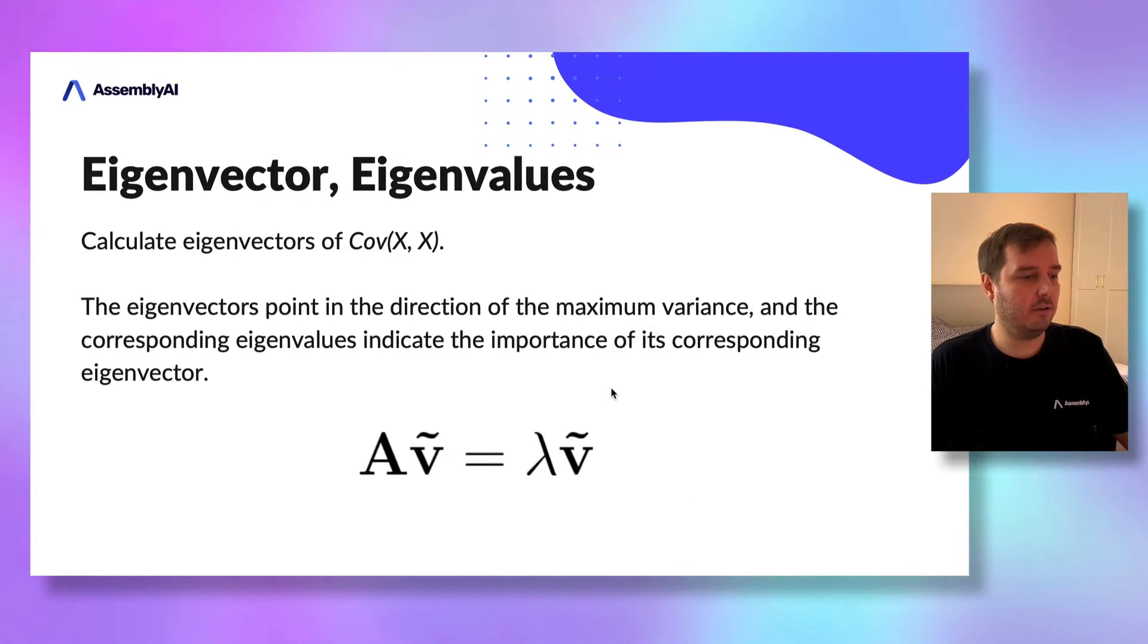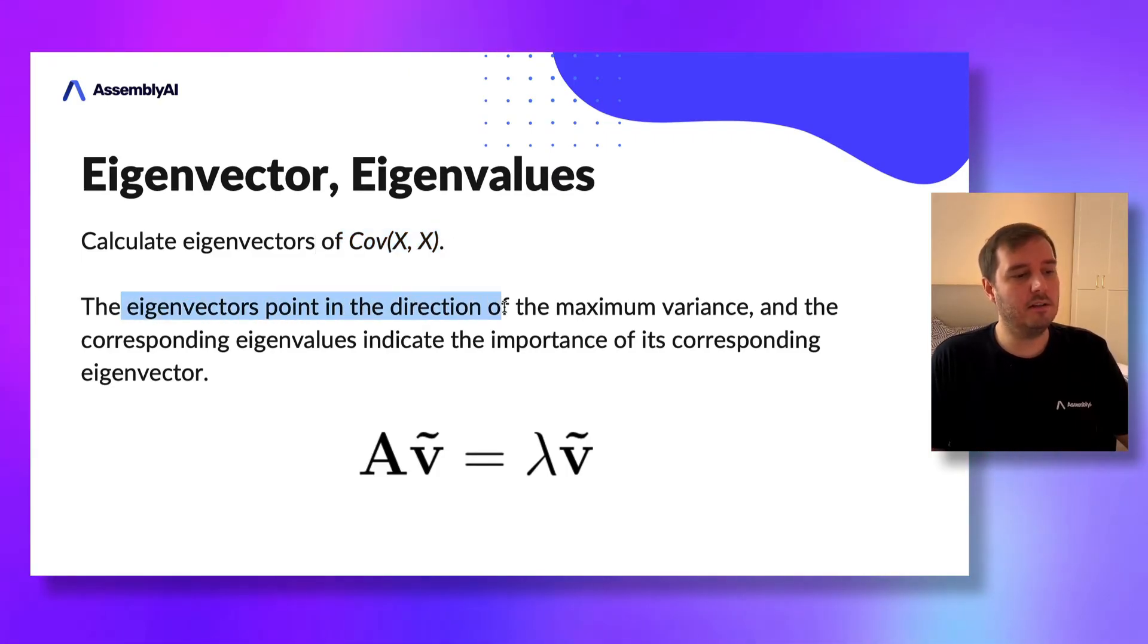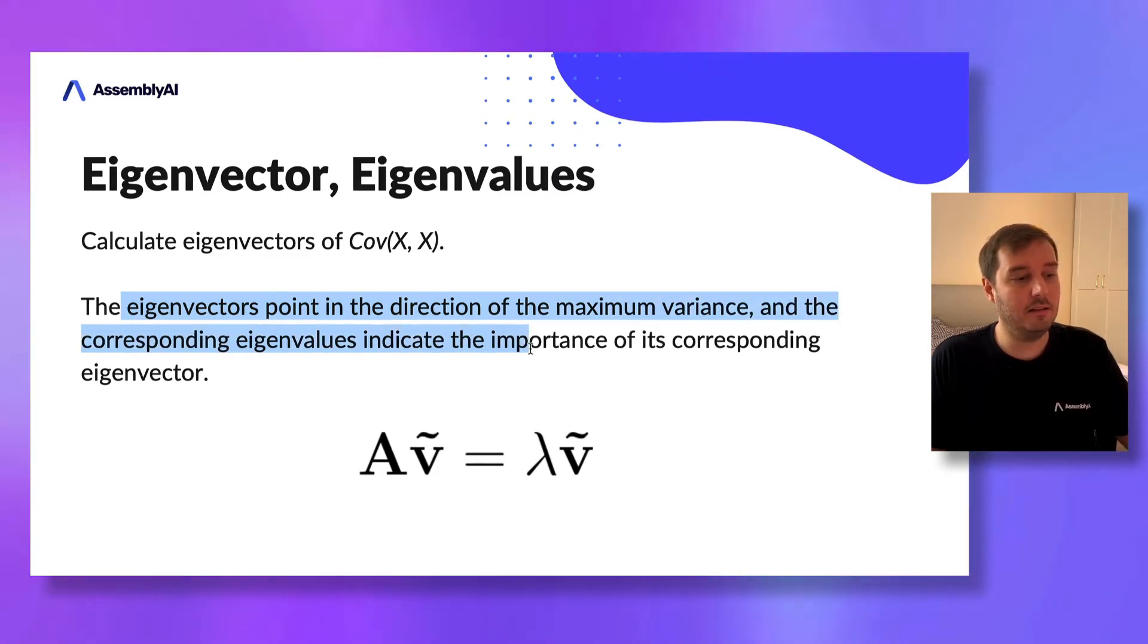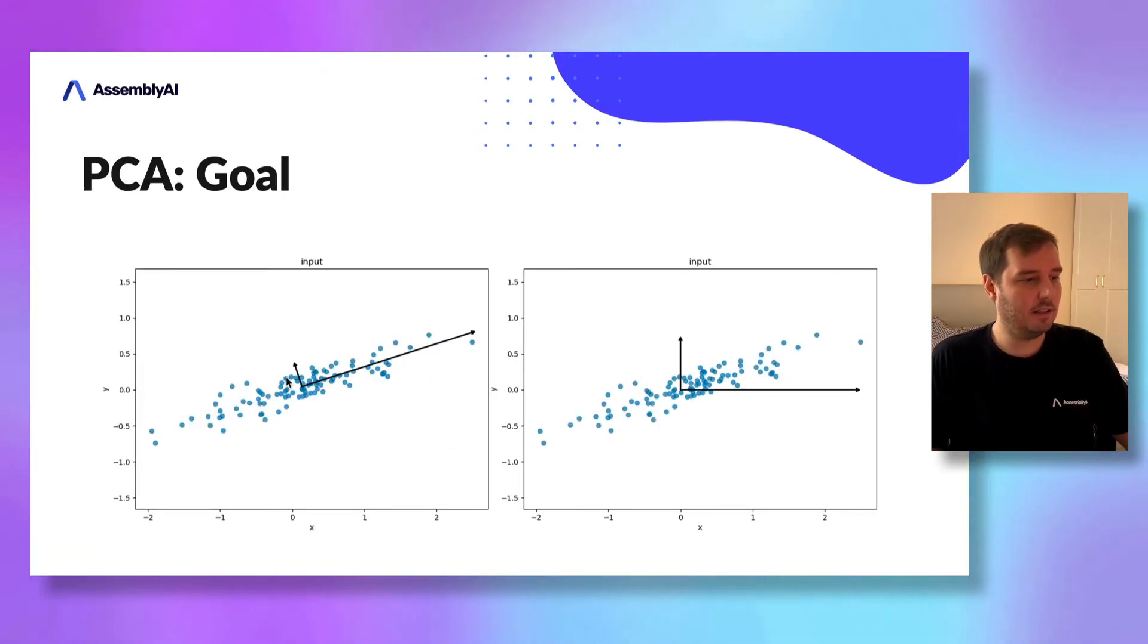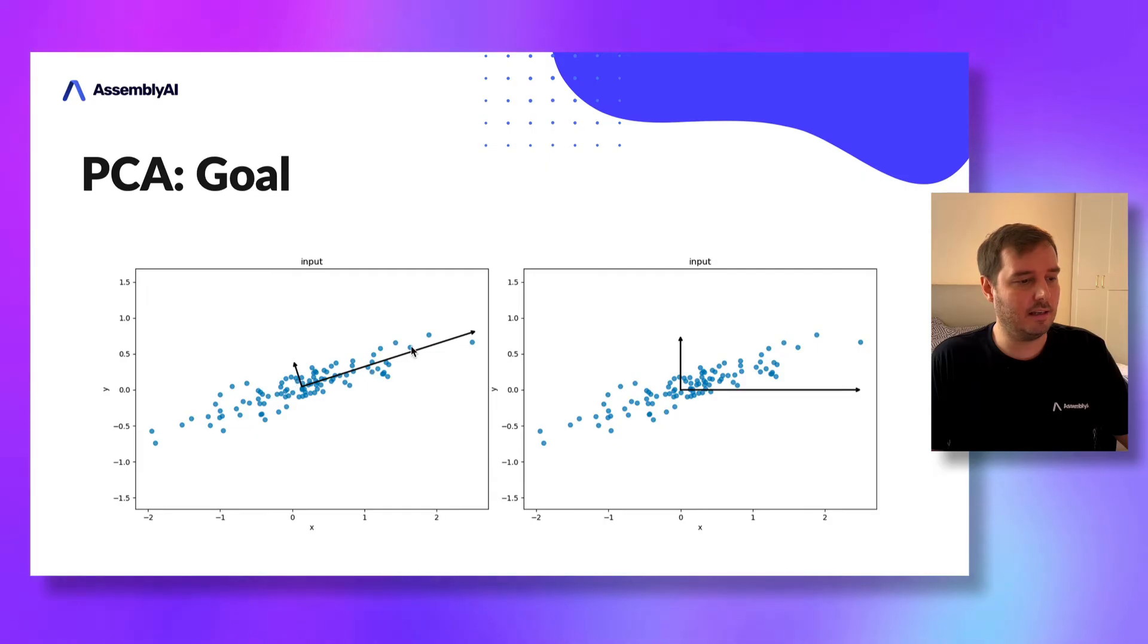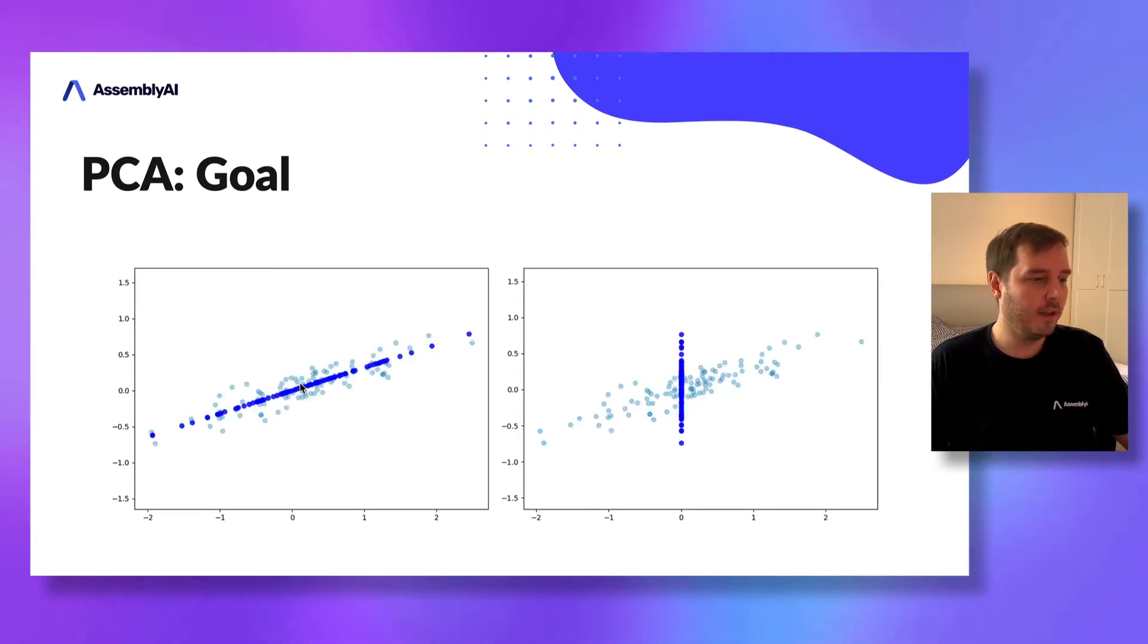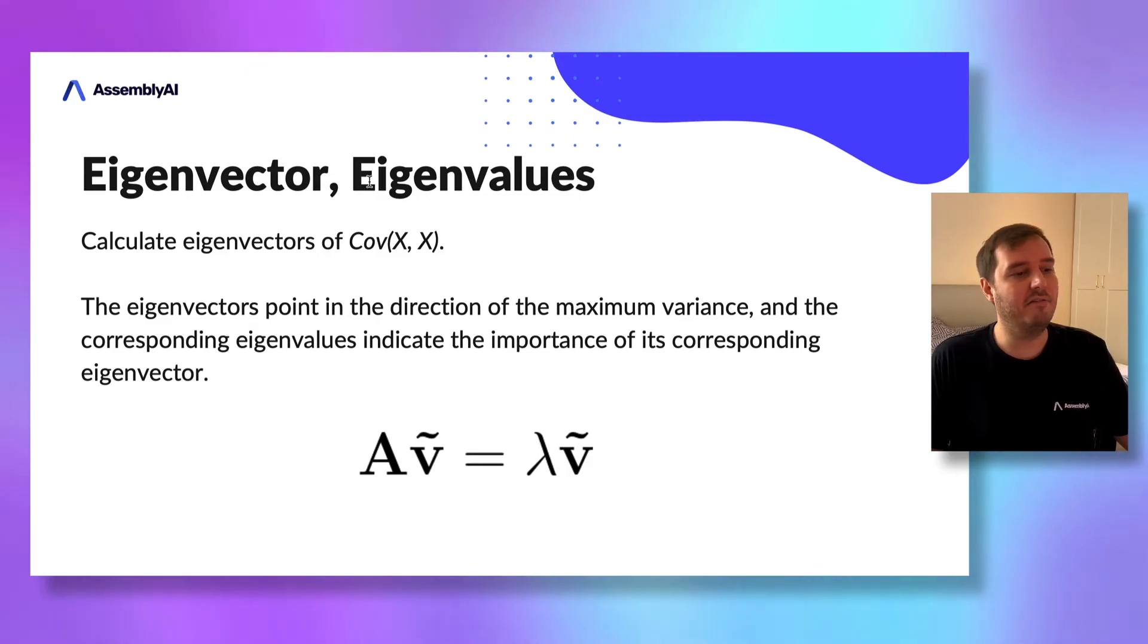If we calculate the eigenvectors and eigenvalues of the covariance matrix, the eigenvectors point in the direction of maximum variance, and the corresponding eigenvalues indicate the importance of each eigenvector. In this example on the left side, these two axes are the first two eigenvectors. This axis belongs to eigenvalue one with the highest importance, and this one to eigenvalue two. Basically, this all boils down to an eigenvector eigenvalue problem.